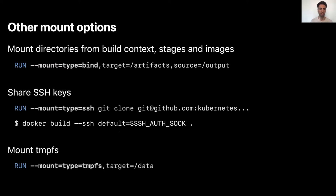BuildKit also supports other types of mounts like bind mounts. Bind mounts are useful when you need to mount some directories from your build context, different stages in the build, or a different Docker image — for example, to mount some data or a binary without persisting it into your produced image. You can also use SSH mounts, useful if you need to run SSH commands within your build, like a git clone using an SSH URL. And you also have tmpfs mounts, useful when you need temporary storage that you don't want polluting your resulting image.